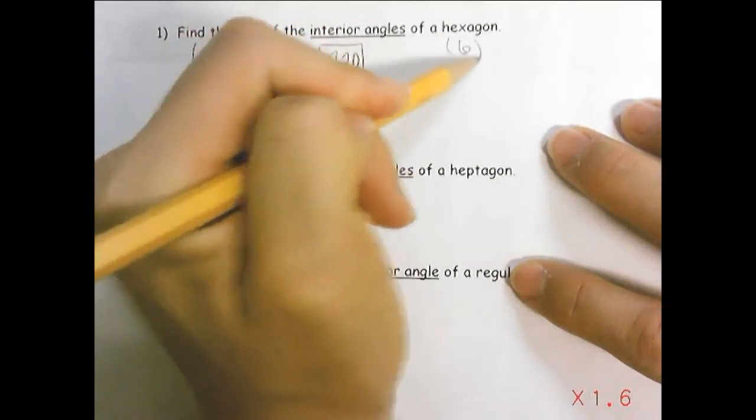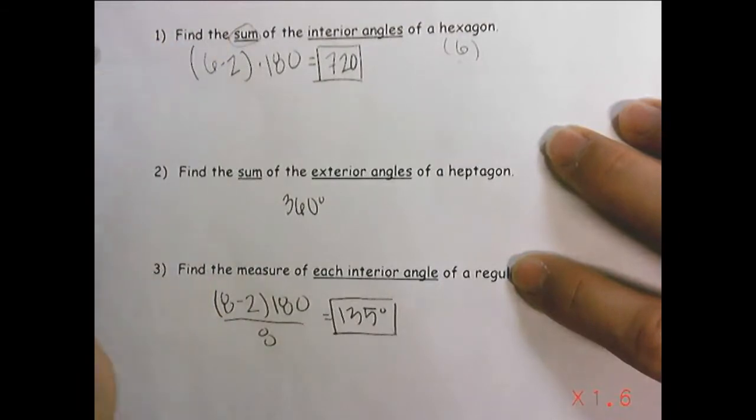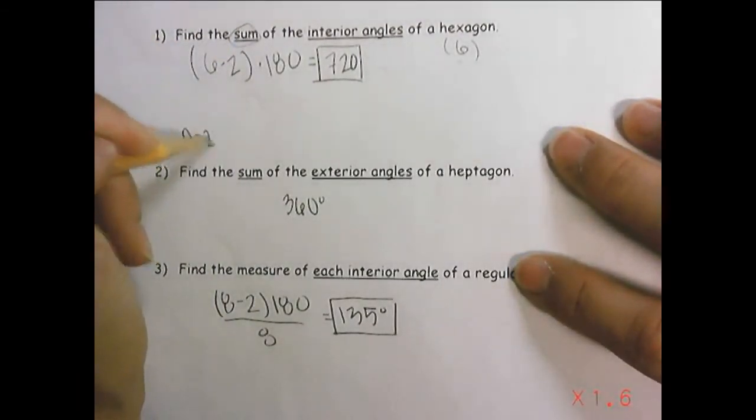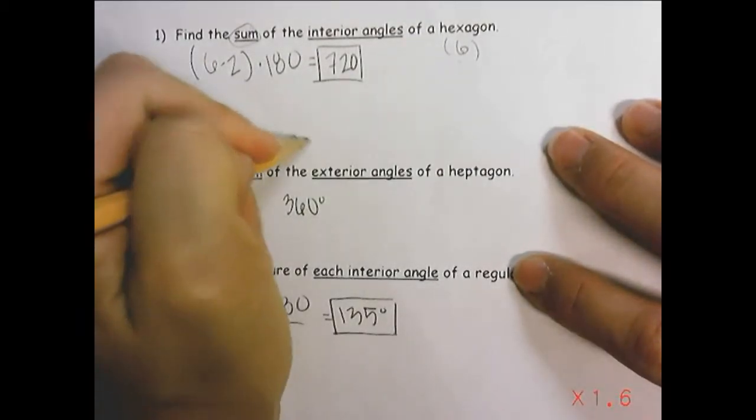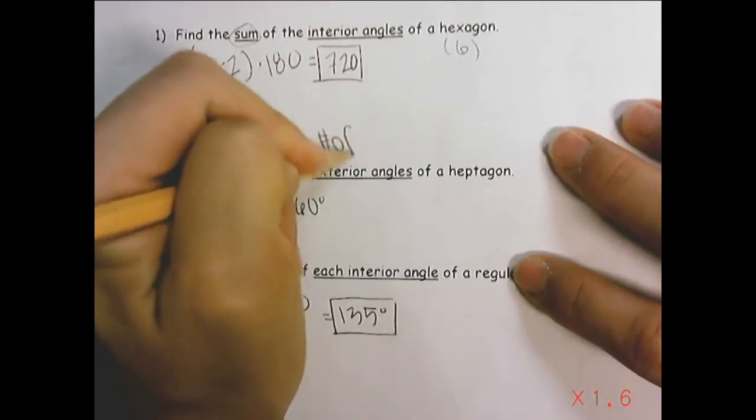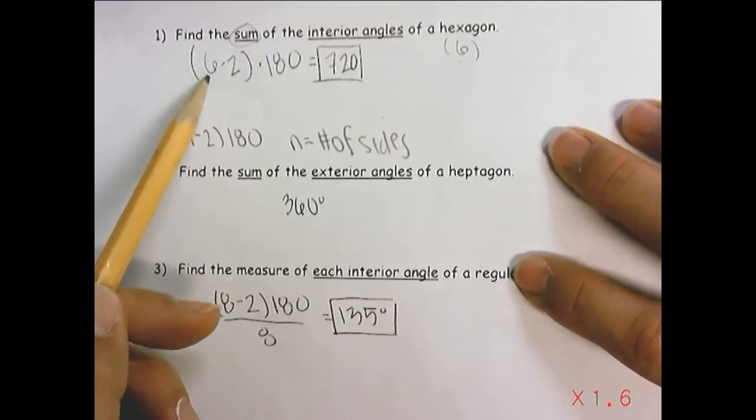Well, just keep in mind that a hexagon is six sides, and that the formula for finding the sum of interior angles is n minus two times 180, where n equals the number of sides.